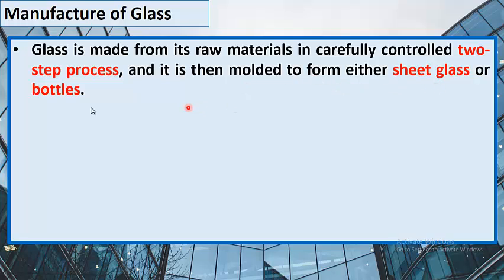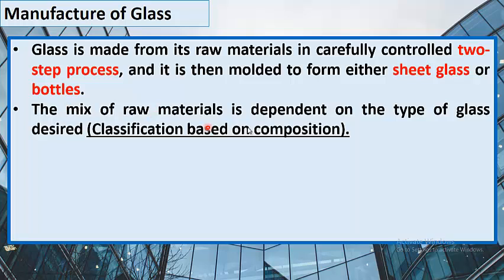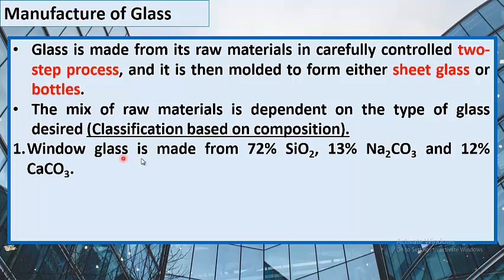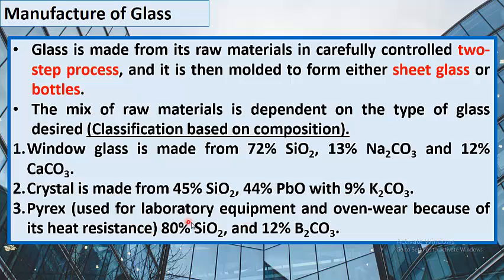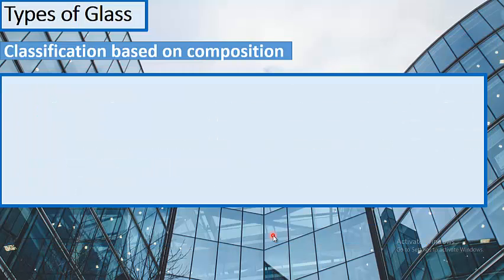Glass is made from its raw materials in a carefully controlled two-step process and is then molded into either sheet glass or bottles. Glass is classified based on composition: window glass is made from 72% silica (SiO₂), 13% sodium carbonate, and 12% calcium carbonate. Crystal is made from 45% silica, 44% lead oxide, and 9% potassium carbonate. Pyrex, used for laboratory equipment and ovenware due to its heat resistance, uses 80% silica and barium carbonate.